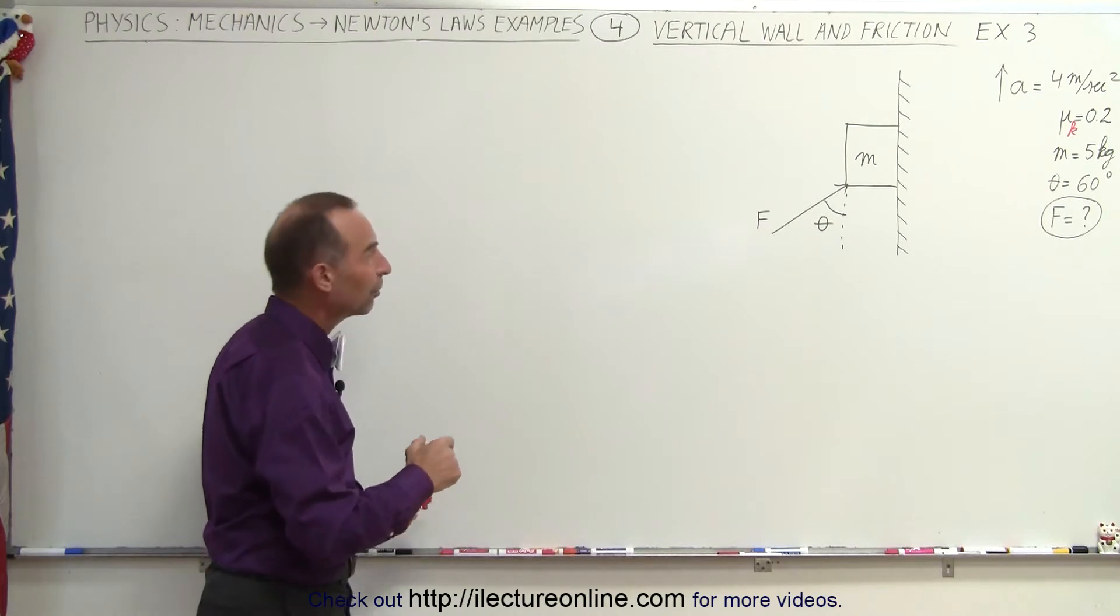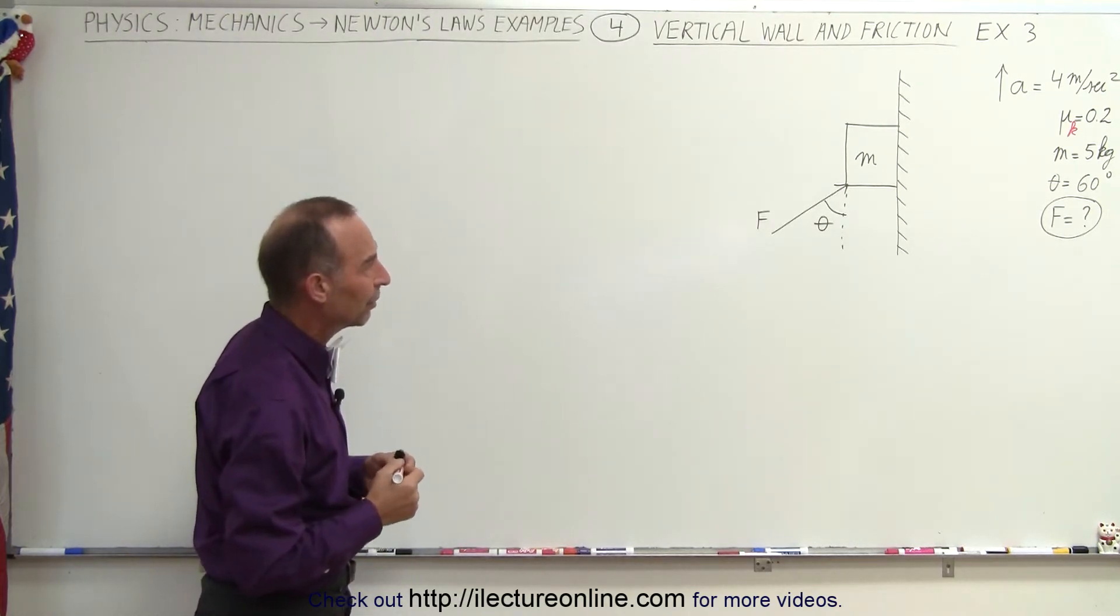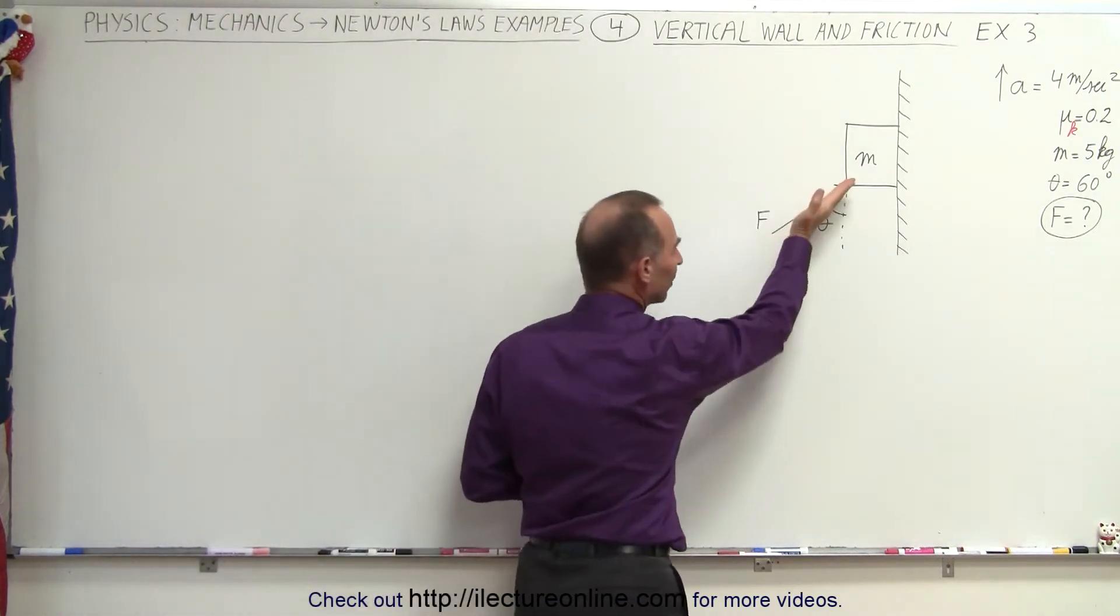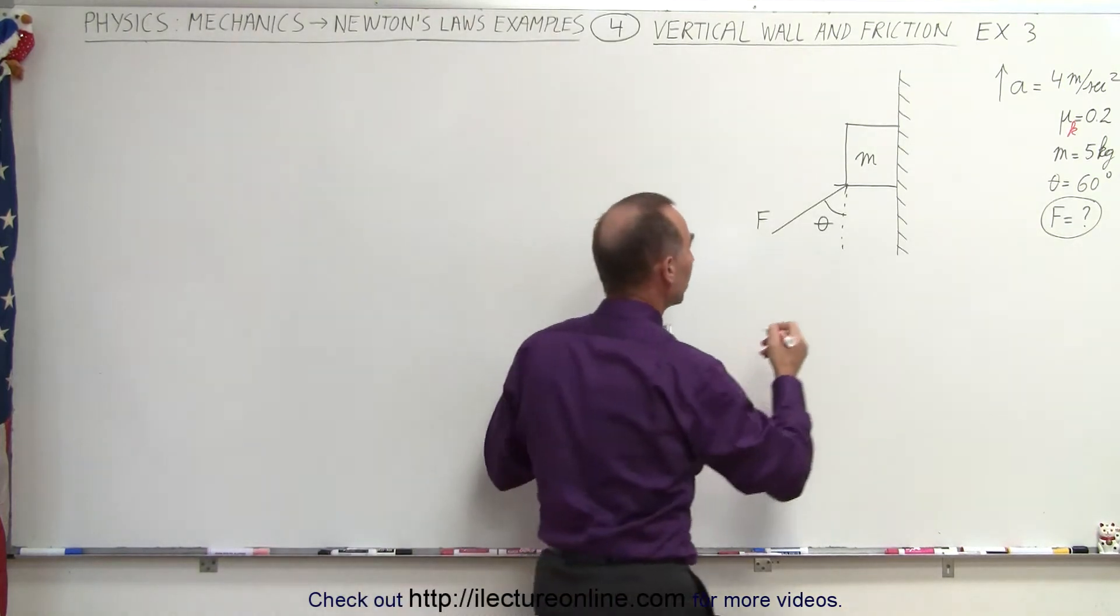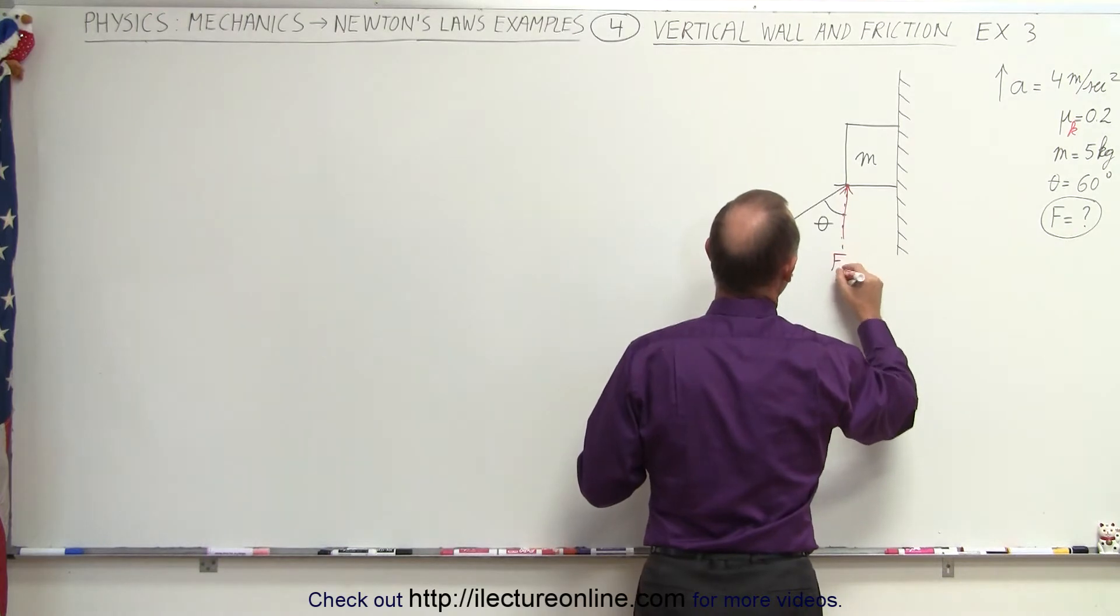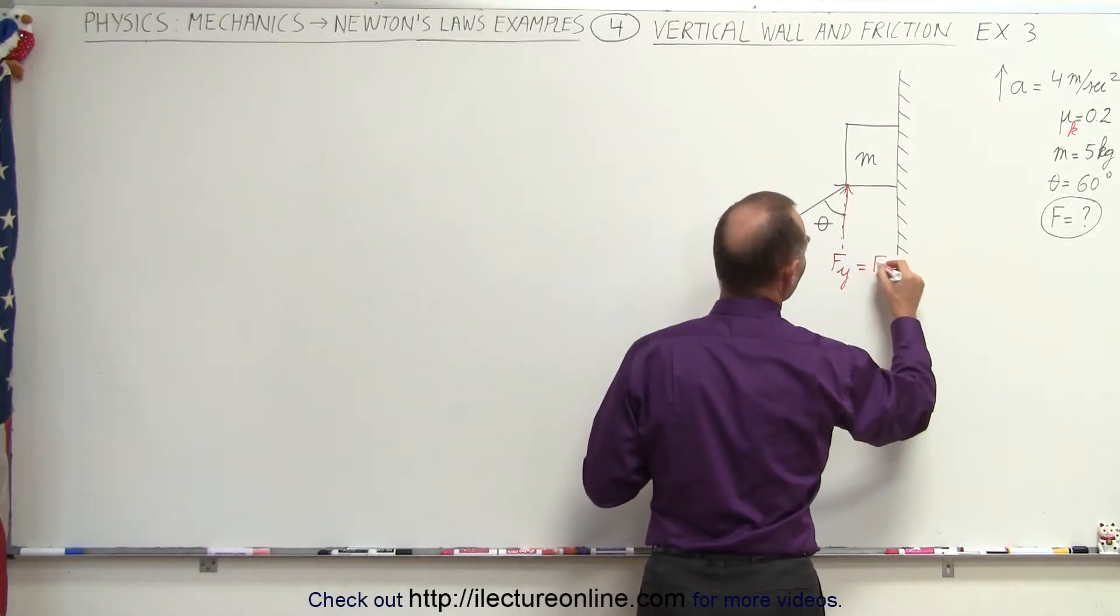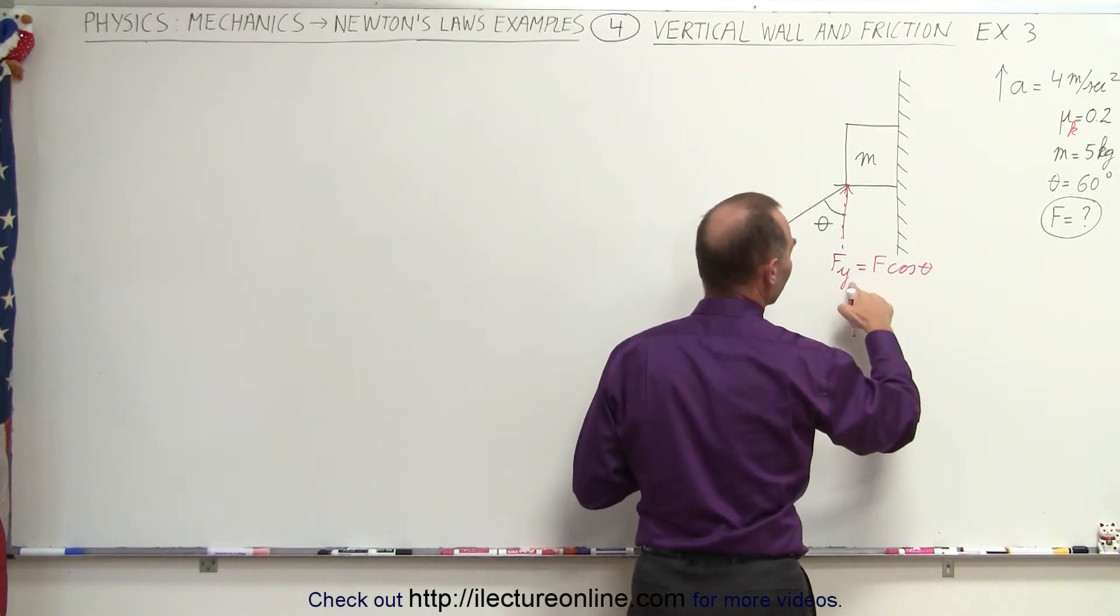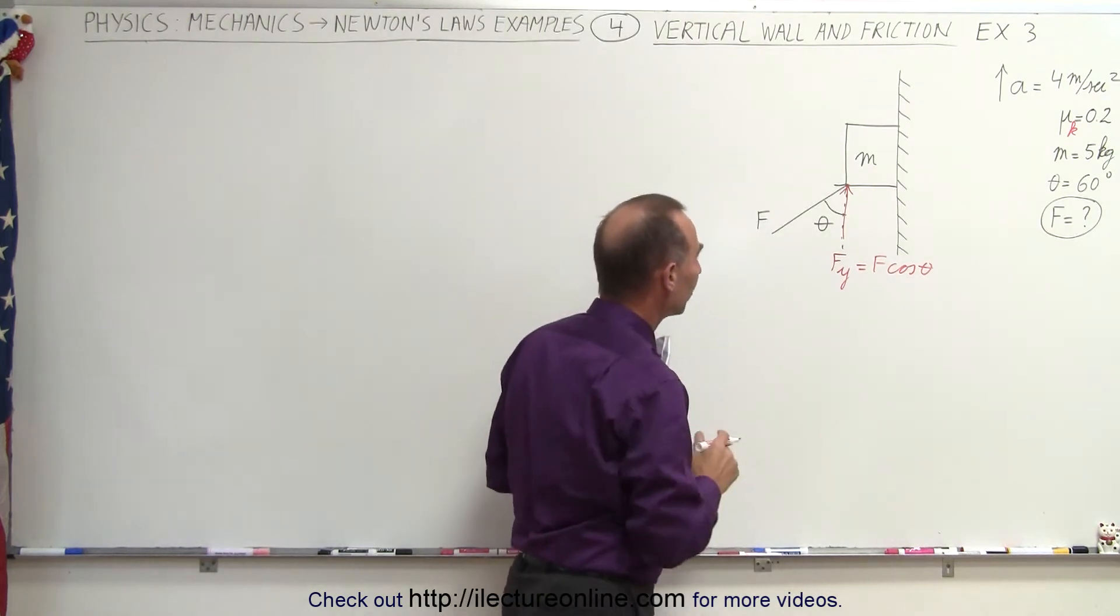But just like before, we'll start by indicating all the forces acting on this particular object with mass m, and if we have a force acting at an angle like we have here, we have to find both the vertical and the horizontal component. So we start up here with F in the y direction, and since that's adjacent to the angle, this will become F times the cosine of theta, as before. Cosine associated with y seems kind of odd, but that's because the way the problem was drawn.